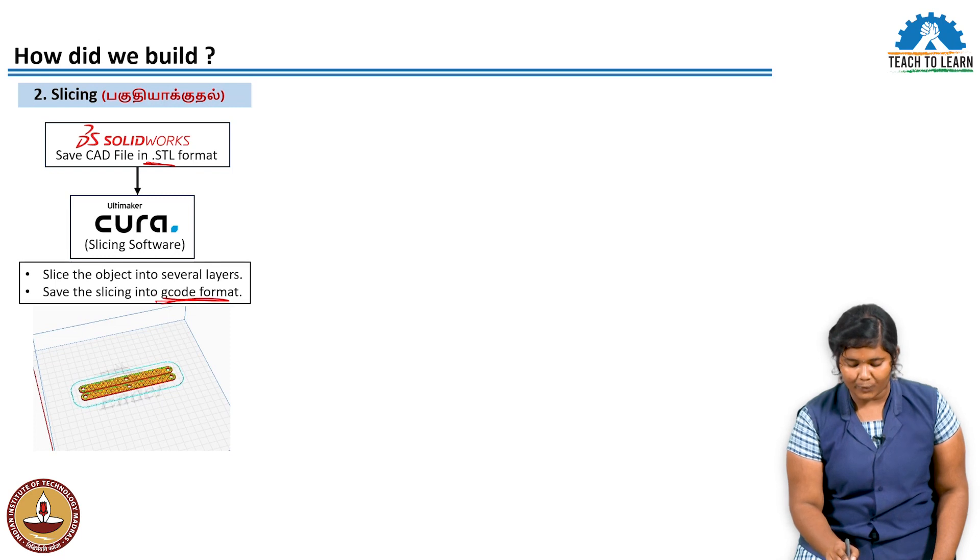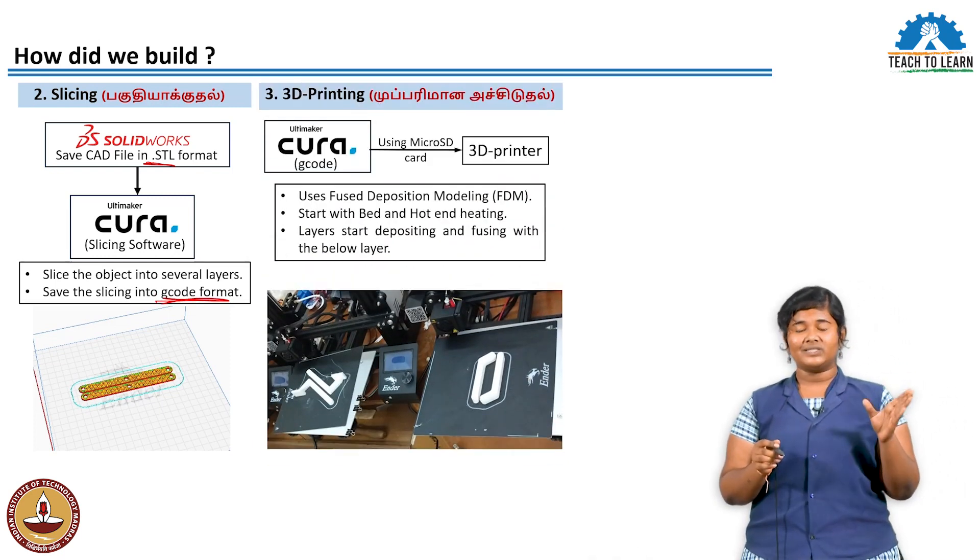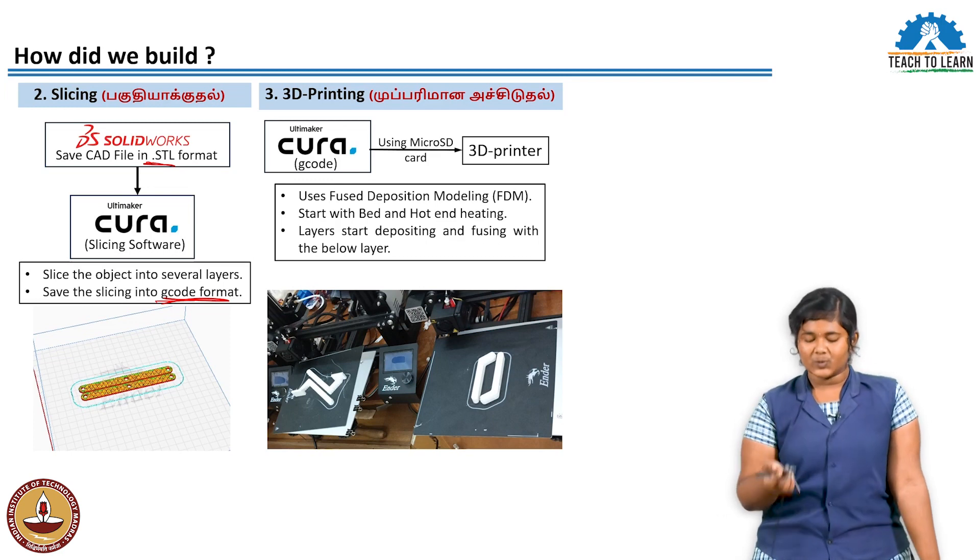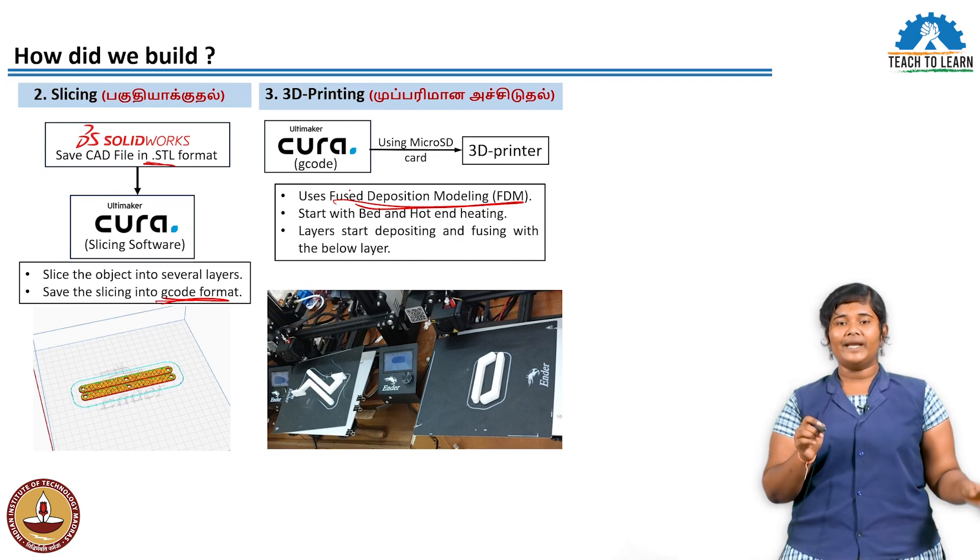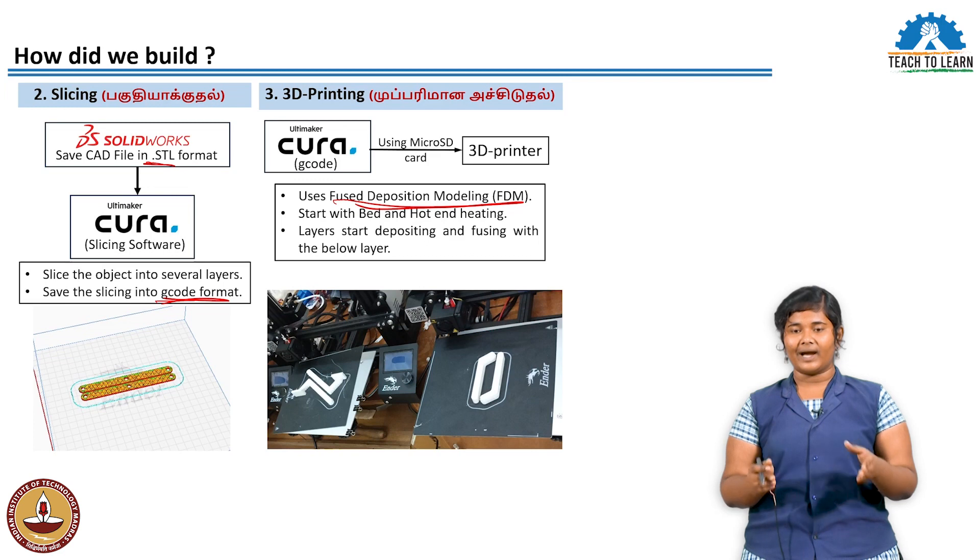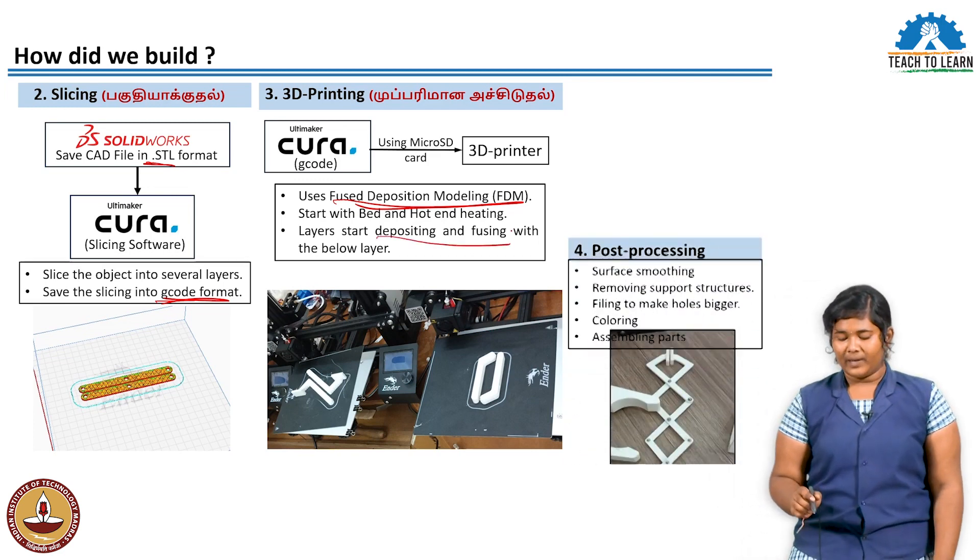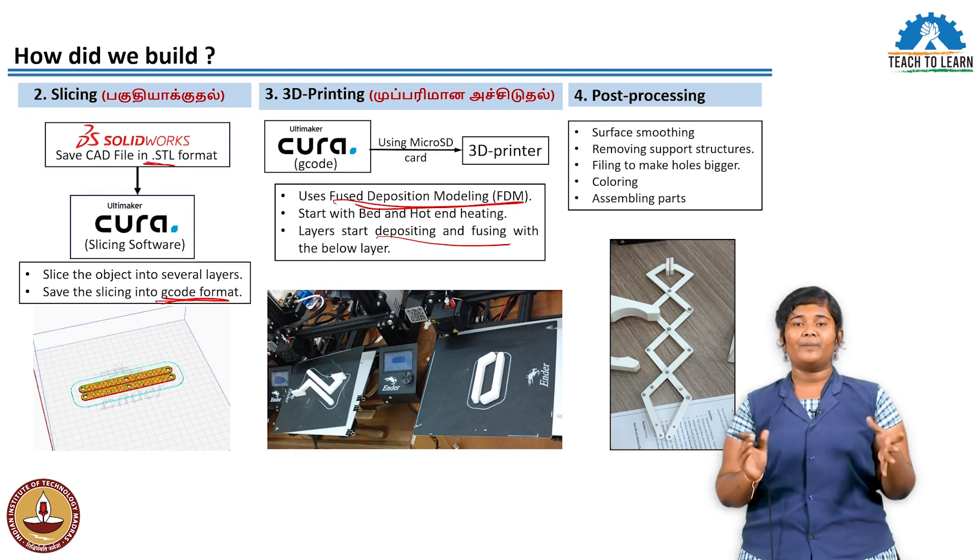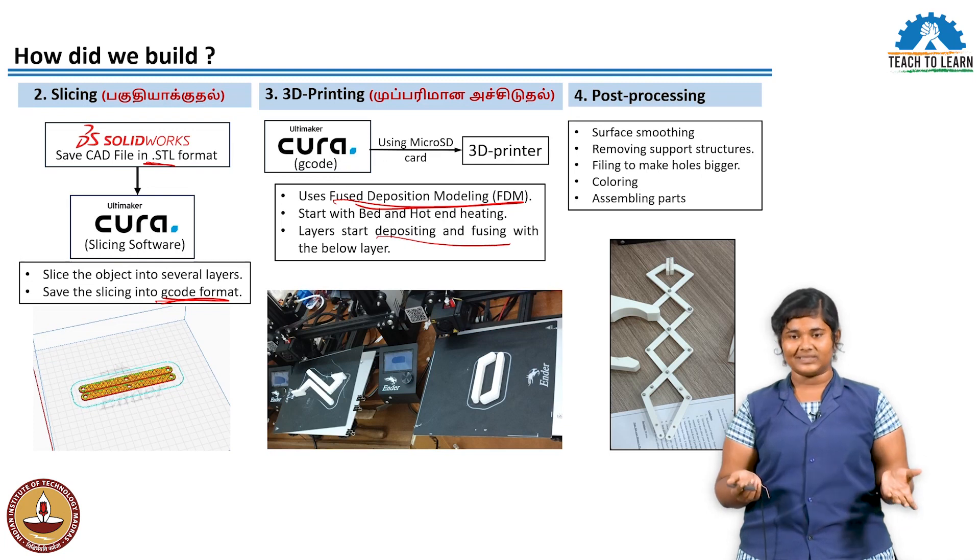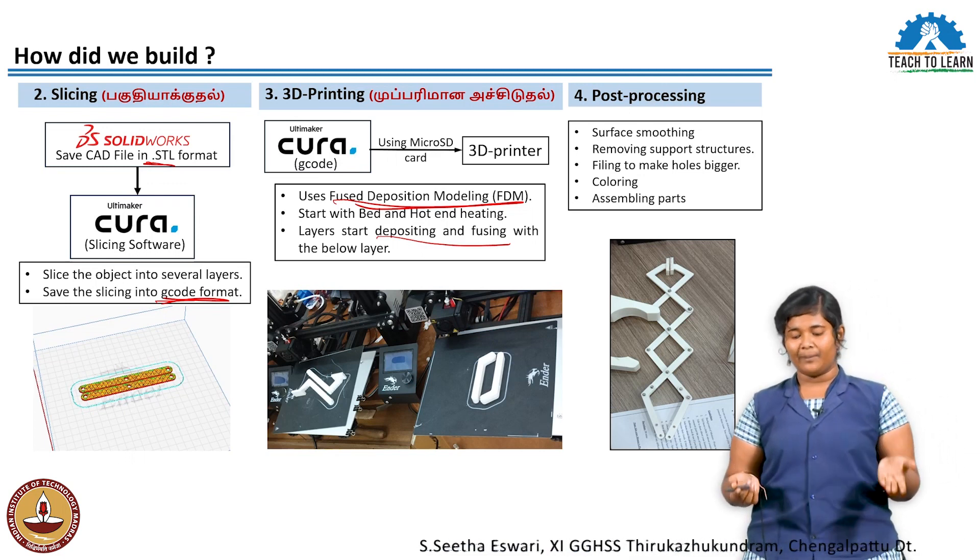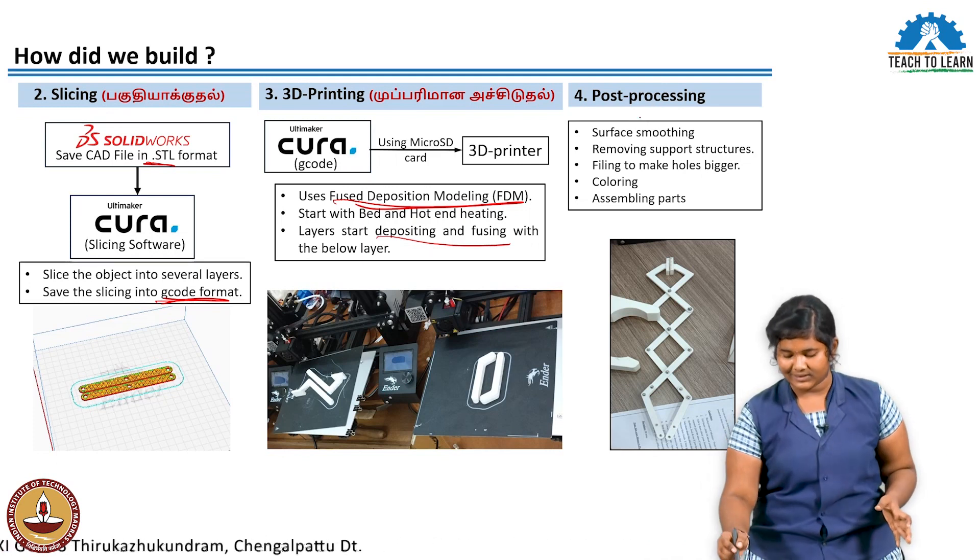Then we save it in G-code format, which is the programming language understood by the 3D printer. My 3D printer uses fused deposition modeling - the filament is heated through a tube into liquid form, then printed on the bed where it fuses with the previous layer. After printing comes post-processing, where we smooth the surface, remove support structures, change colors, or cut holes as needed.